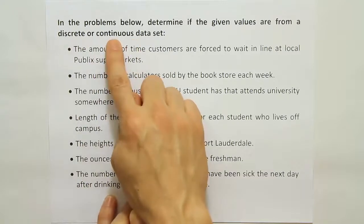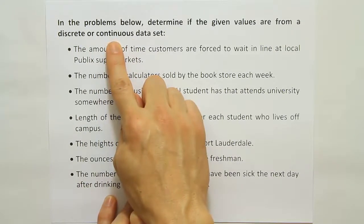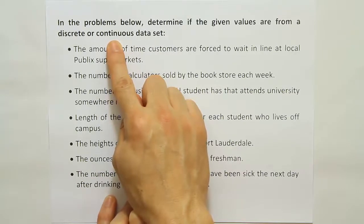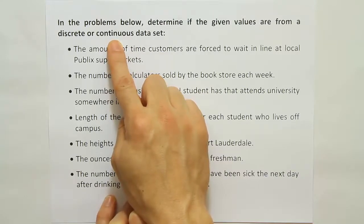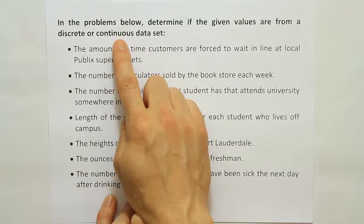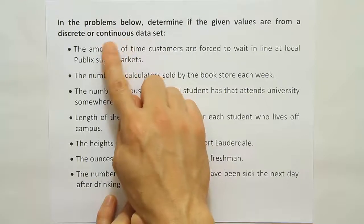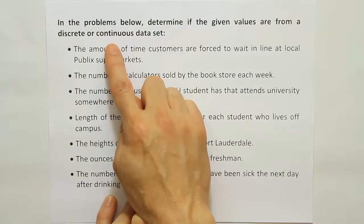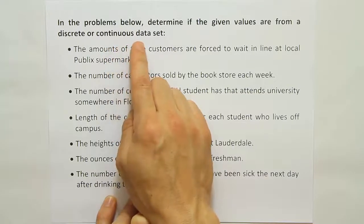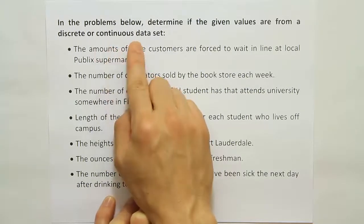In a continuous data set, you don't have that problem. Between any two numbers that are in the data set, you can get any other number in between them. For example, I could have a bag of rocks that weighs one pound, or two pounds, but I could also have a bag of rocks that weighs 1.8 pounds, 1.87 pounds, 1.88 pounds. As long as my scale is sensitive enough to record it, there's no problem — saying the bag of rocks weighs 1.8863 pounds is completely possible. That's the mark of a continuous data set.